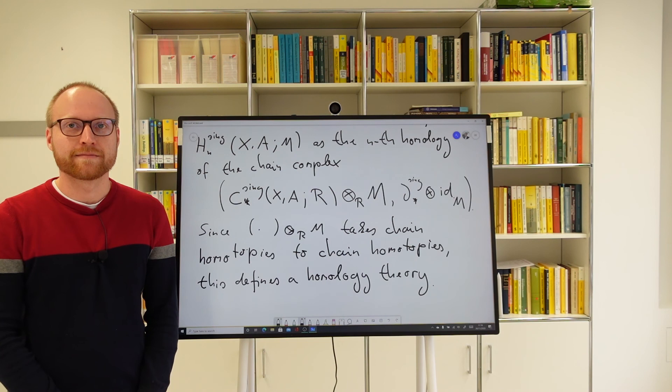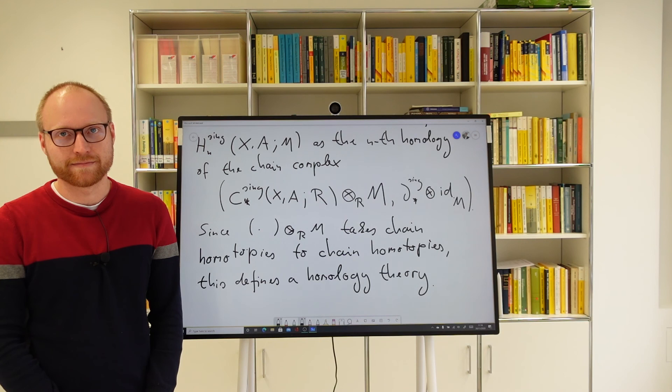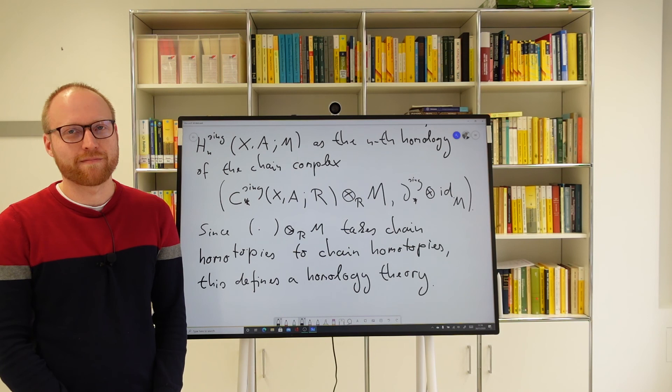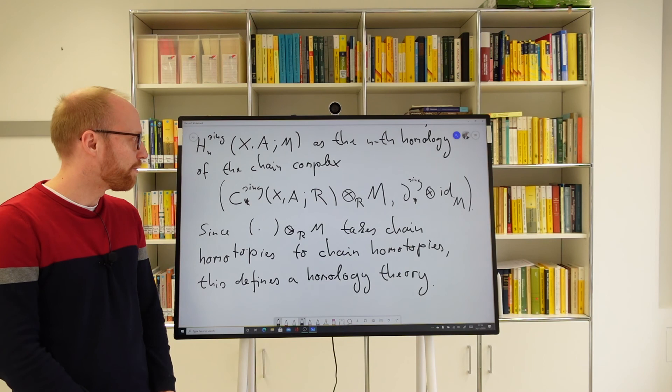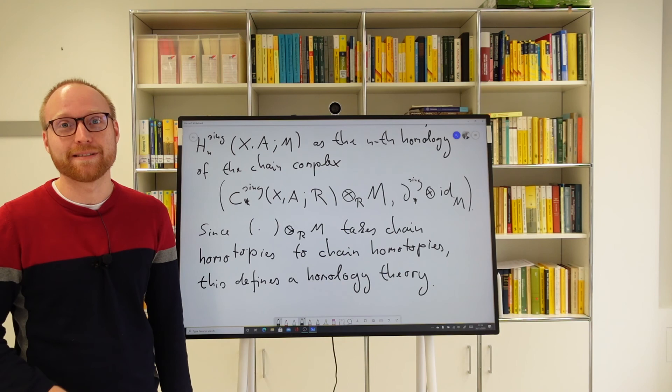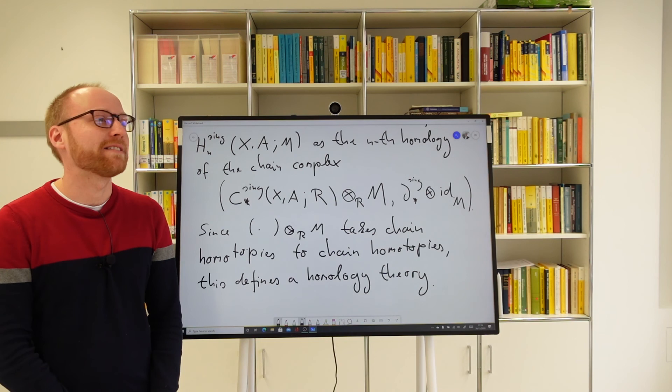Since this functor takes chain homotopies to chain homotopies, this defines a homology theory in the sense of Eilenberg-Steenrod, and actually even an ordinary homology theory — meaning the dimension axiom is also satisfied — the only difference being that the zeroth homology of a one-point space is now the coefficient module M rather than R. So it works, one just has to be careful at the appropriate steps.